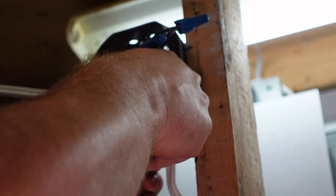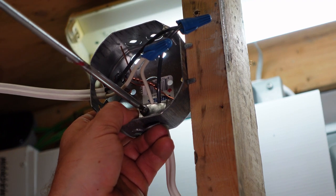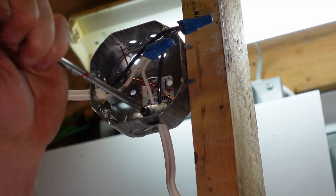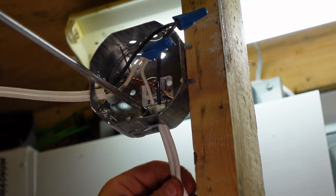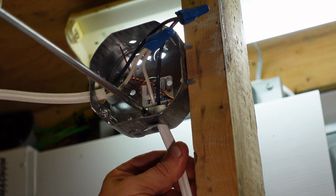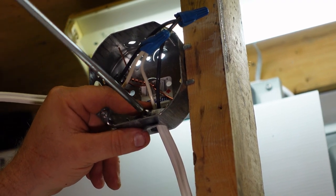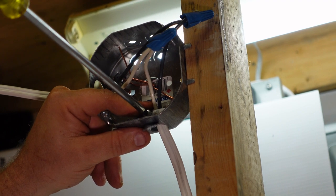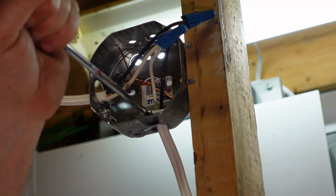We're gonna screw that in, try not to cross thread it, and make sure the wire is pulled up into place so that we have a little bit showing of the insulation. And then we're gonna just gently tighten that down to the point that it just grabs but does not pinch the wire.